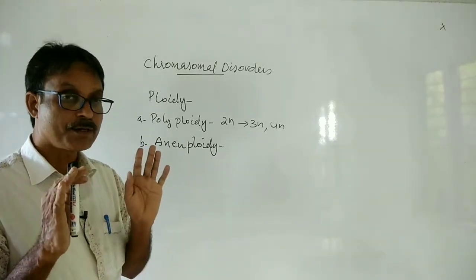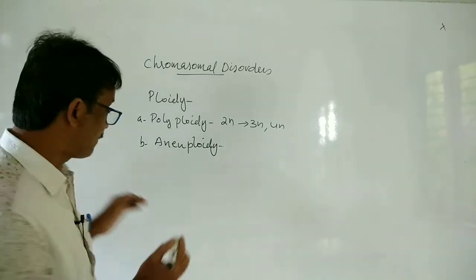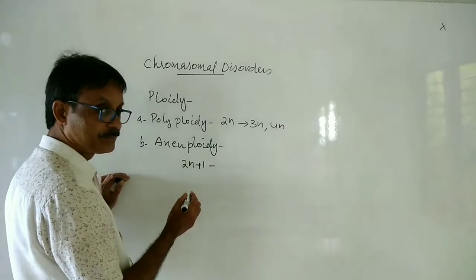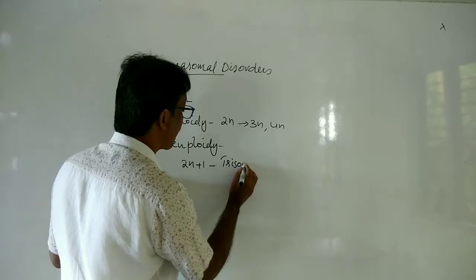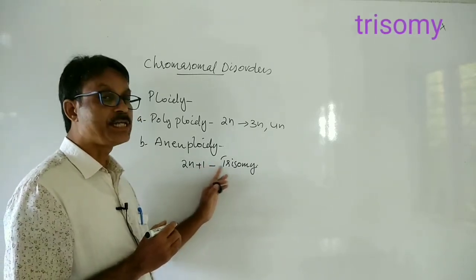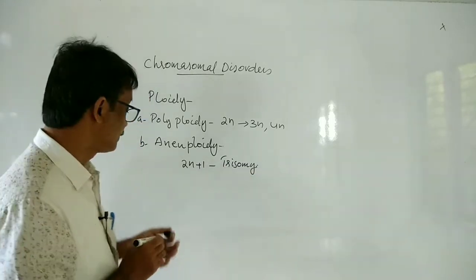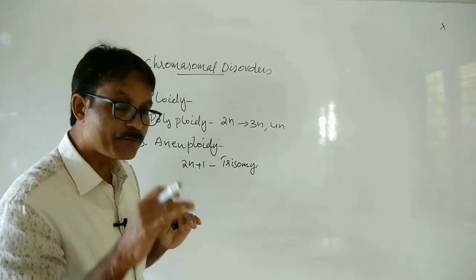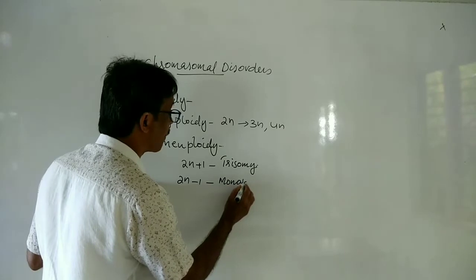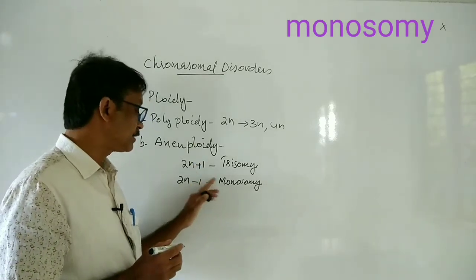The change in the total number of chromosomes may be due to an increase or decrease of one or two chromosomes. If aneuploidy is due to an increase, like 2n plus one, then it is called trisomy. An increase in the number by one chromosome is called trisomy. If aneuploidy is due to a decrease in one chromosome, like 2n minus one, then it is called monosomy.